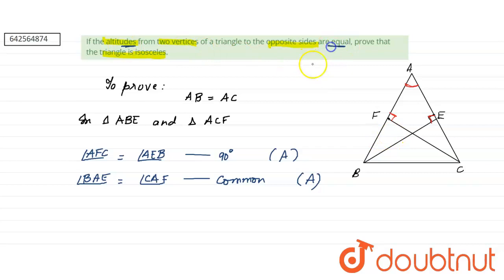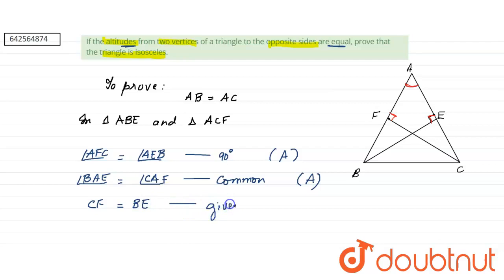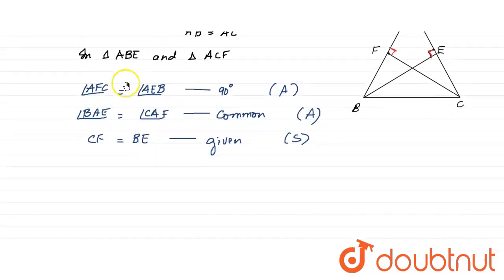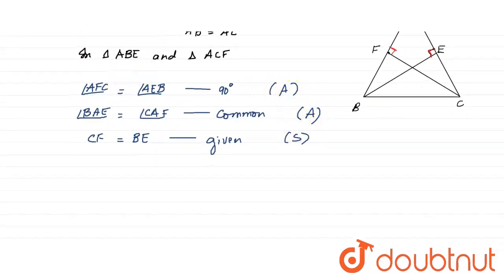The altitudes are equal, which means CF equals BE. So CF equals BE, and this is given. This is a side, completing our AAS (Angle-Angle-Side) conditions.